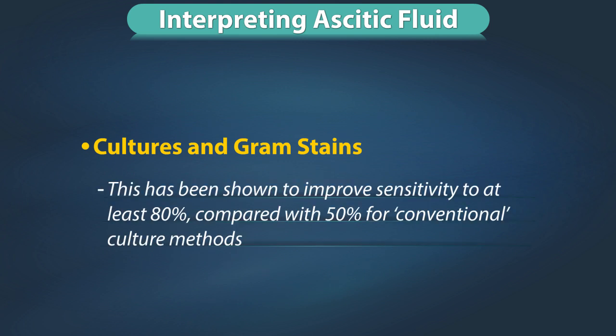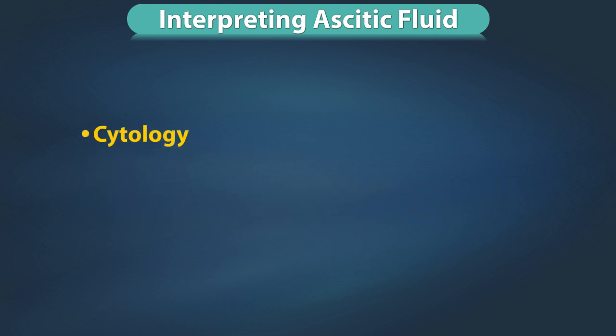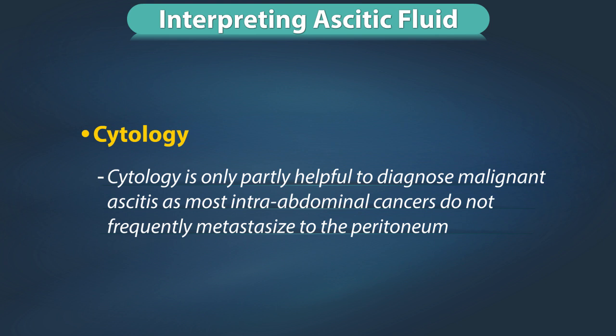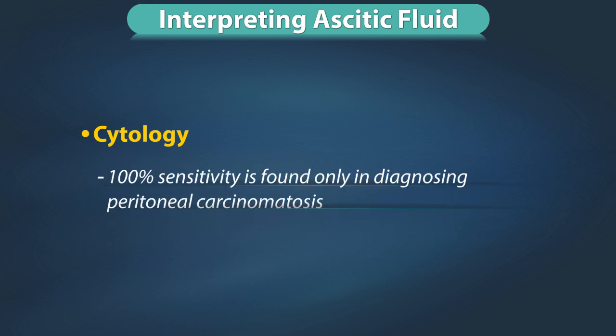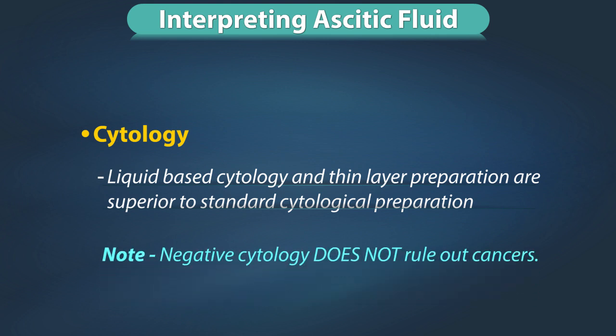Culture should be obtained by inoculating blood culture bottles at the bedside, which improves sensitivity to at least 80% compared with 50% for conventional culture methods. Gram stains are rarely positive as the concentration of organisms is not high enough. Cytology is only partially helpful for diagnosing malignant ascites, as most intra-abdominal cancers do not frequently metastasize to the peritoneum. 100% sensitivity is found only in diagnosing peritoneal carcinomatosis. Liquid-based cytology and thin-layer preparations are superior to standard cytological preparations. Note: negative cytology does not rule out cancers.